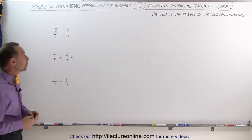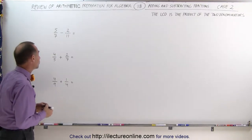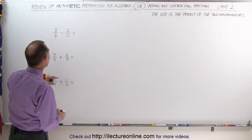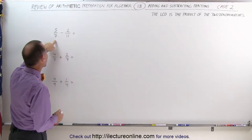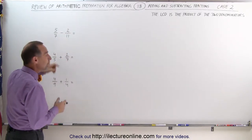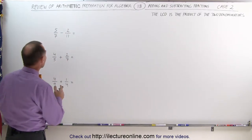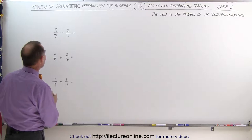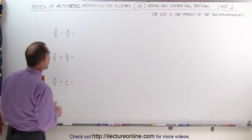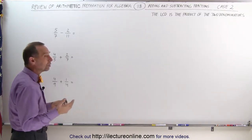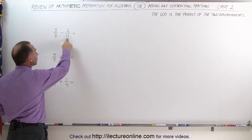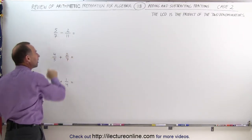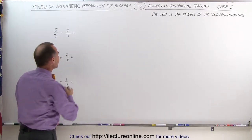Let's go ahead and show you how to execute these. Here we have subtraction. We realize that since the denominators are prime numbers, we need to multiply the denominators to find the lowest common denominator. Another way to think about it is to multiply each denominator by the other denominator.